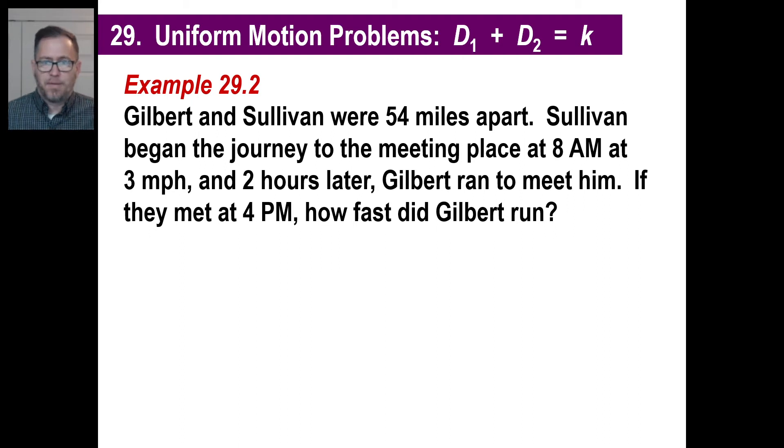Let's try another one. Gilbert and Sullivan were 54 miles apart. Sullivan began the journey and Gilbert ran to meet him. Meet means here's Gilbert running doing this. Sullivan is over here and he's running here. Meet means they got together, so they covered the 54 miles. This right here is 54. Don't assume that they both traveled half that. They could have traveled two different distances. So we'll figure out what those are.